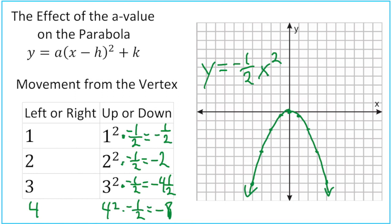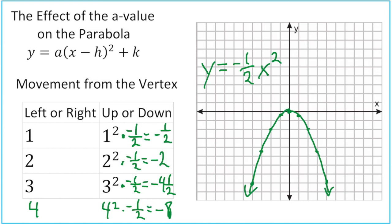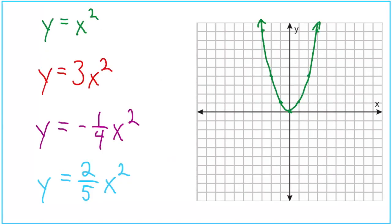Notice that when you have a fraction that's less than one, whether it's positive or negative, it makes the parabola wider than our parent graph of y equals x squared. We'll end the video by putting three graphs all together so you can see how they compare to the parent graph. You can stop the video and try them on your own, although the very last one requires some fraction skills.